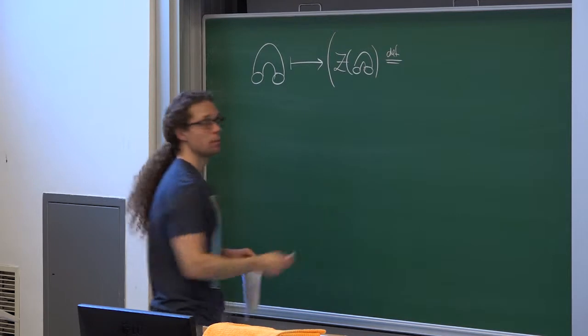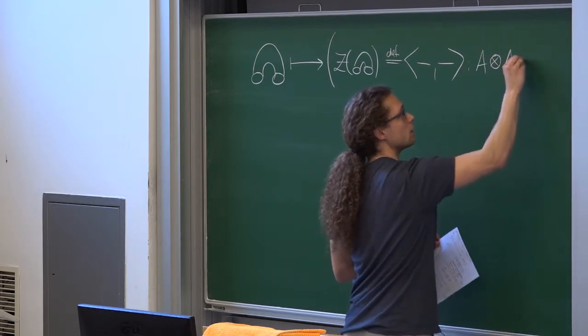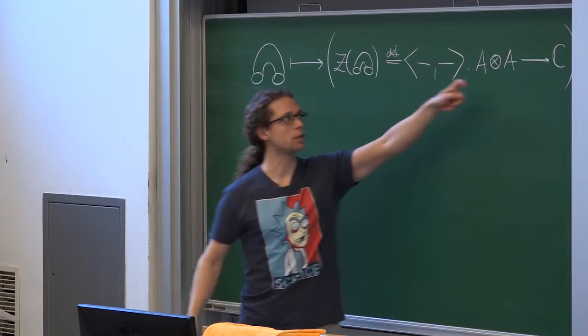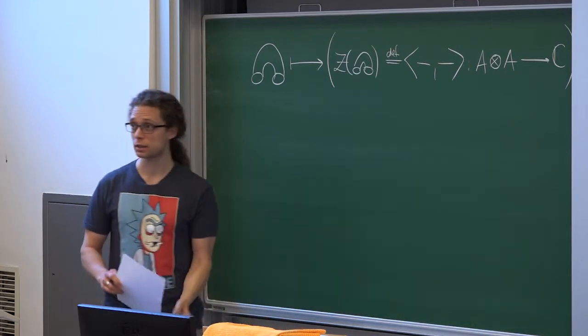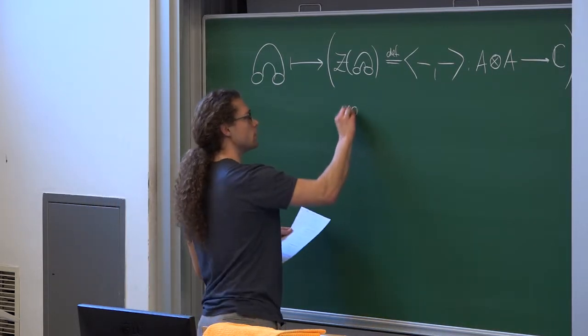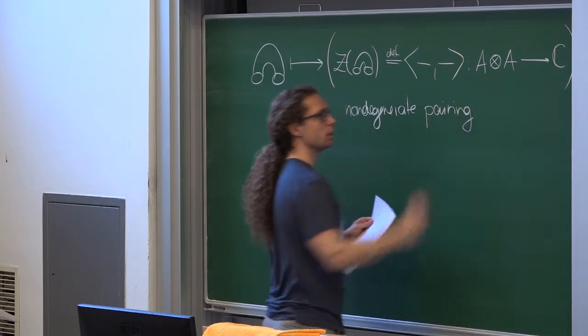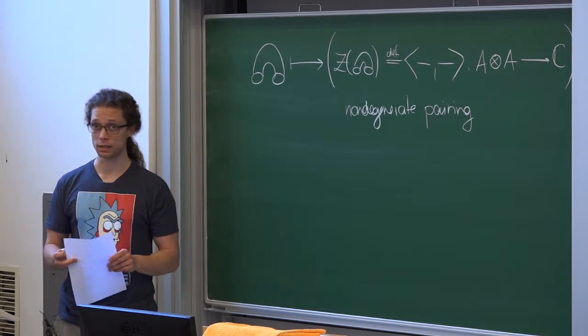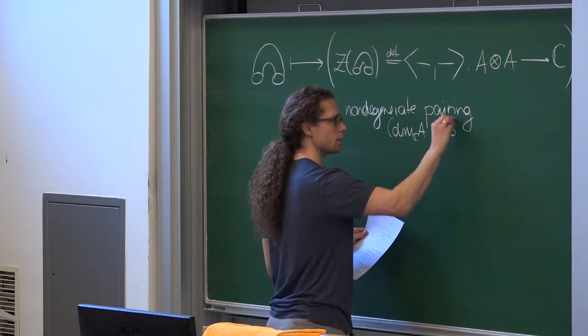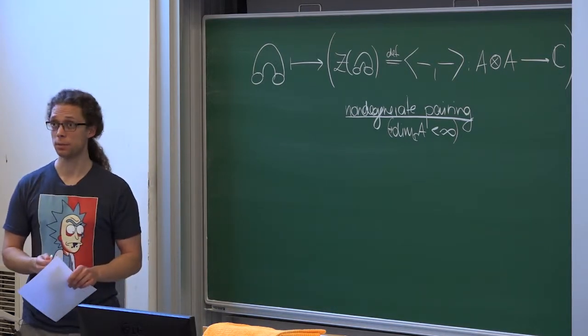And instead of writing Z of blah blah blah, I'll denote it by pointy brackets. This is a map from A tensor A to the complex numbers, which would take an element from here, put it there, take an element from the right factor and put it there. And the claim is that this pairing on A is non-degenerate. So that's a non-degenerate pairing, which in particular implies that the vector space A is finite dimensional, as we discussed in the exercises yesterday. Hence A is finite dimensional.